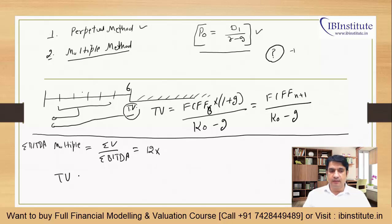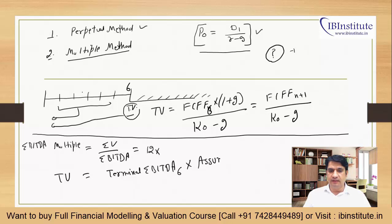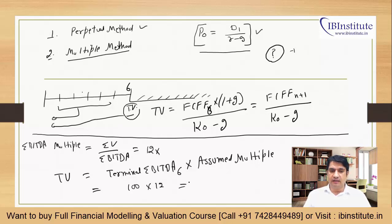Terminal enterprise value is calculated as: terminal EBITDA (the 6th year EBITDA from our financial model forecast) multiplied by the assumed multiple. For example, if terminal EBITDA is 100 rupees and we multiply by 12, we get 1,200 rupees as the terminal enterprise value. That is the formula and model for the multiple method.